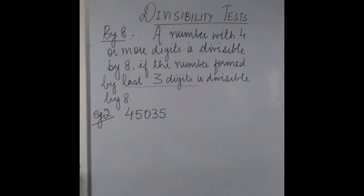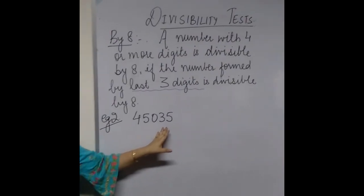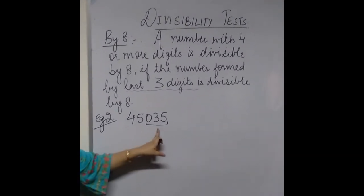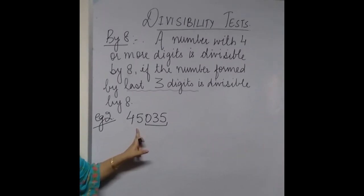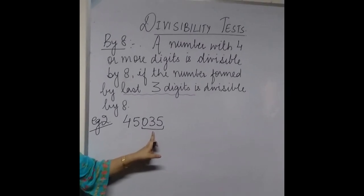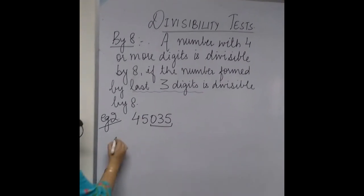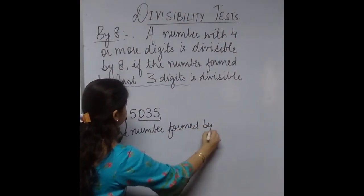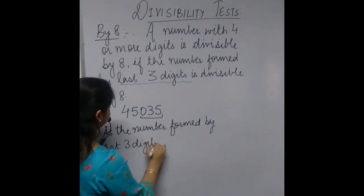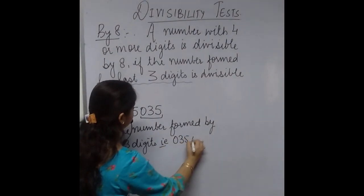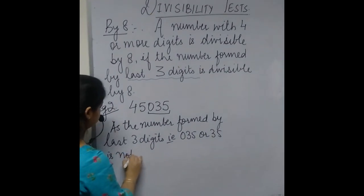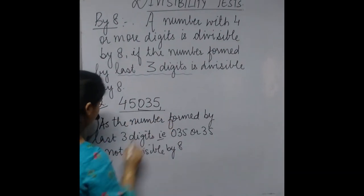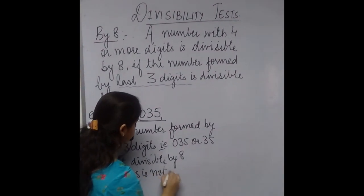Coming to example 2, we have 45035. The number formed by the last three digits is 035, or simply 35. Since 35 is not a multiple of 8, the complete number is not divisible by 8. The number formed by the last three digits, 35, is not divisible by 8, therefore 45035 is not divisible by 8.